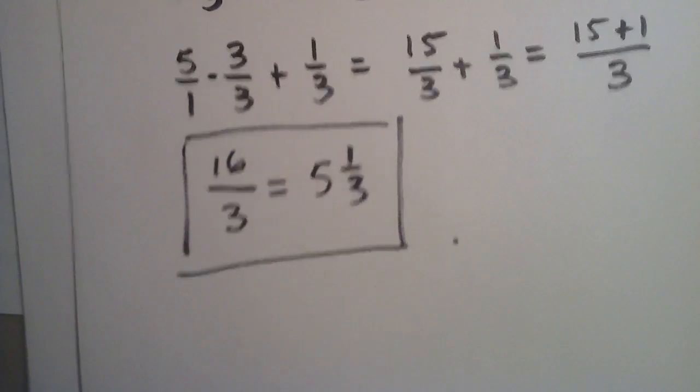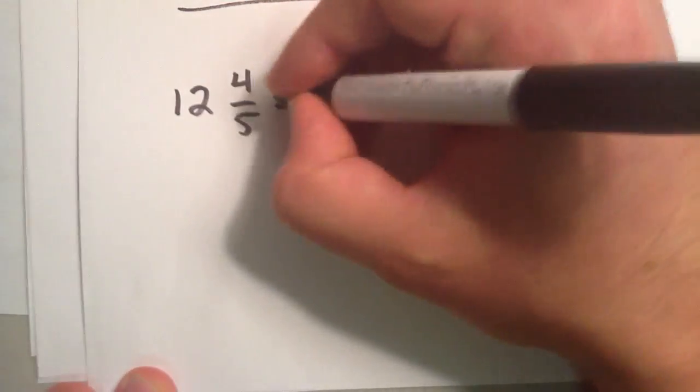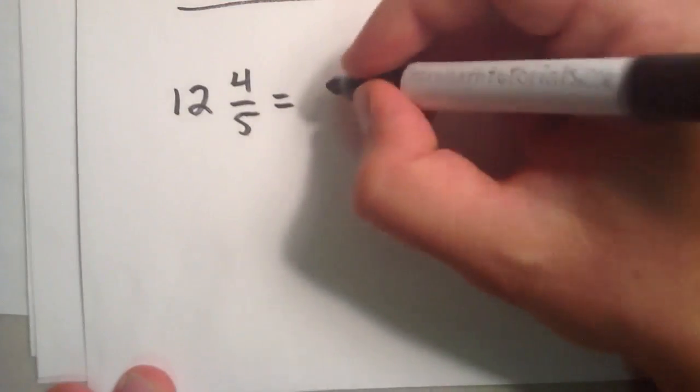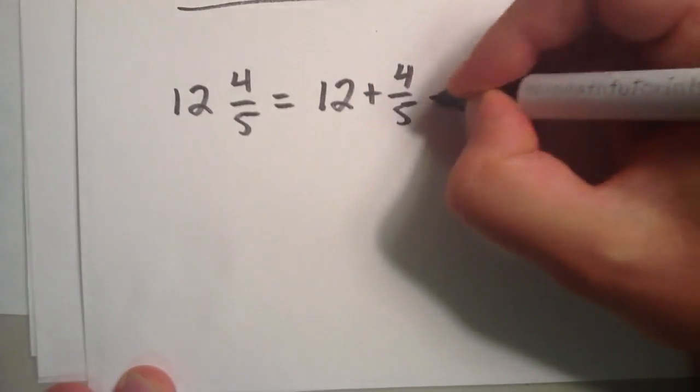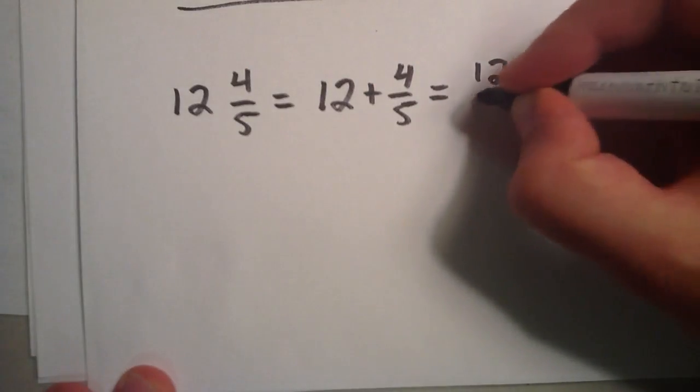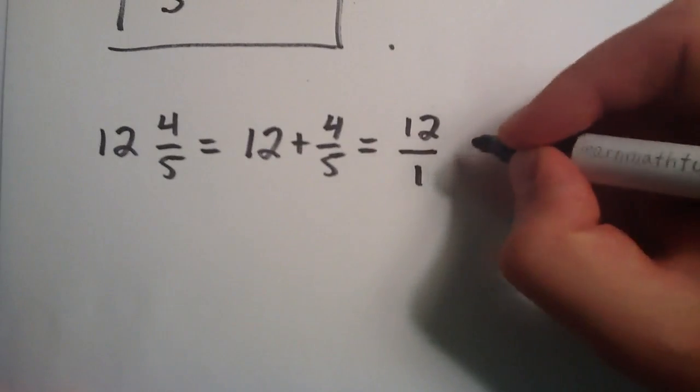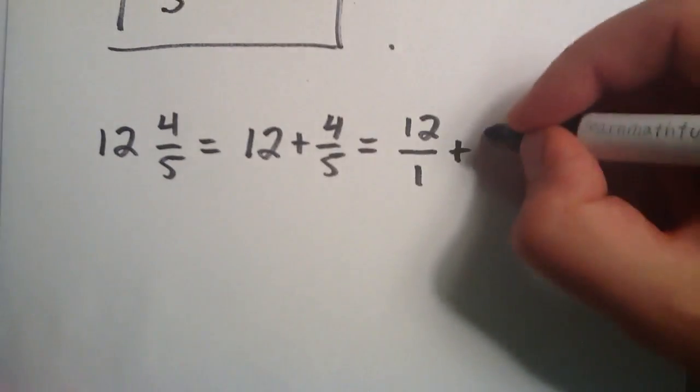Okay, the second example. We're going to start with the mixed fraction 12 and 4 fifths. Rewriting this as an addition problem, 12 plus 4 fifths. And then just specifying that 12 is really the same thing as 12 divided by 1, and then we add the 4 fifths.